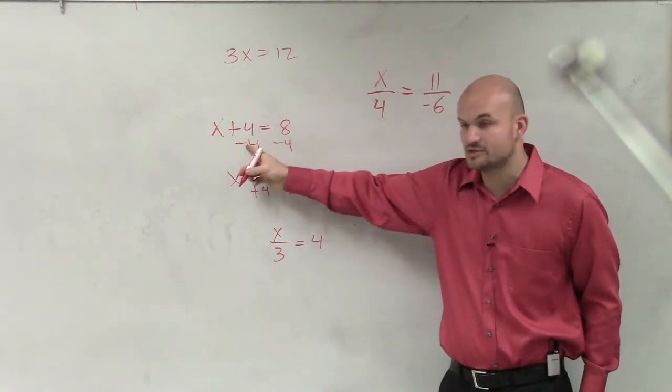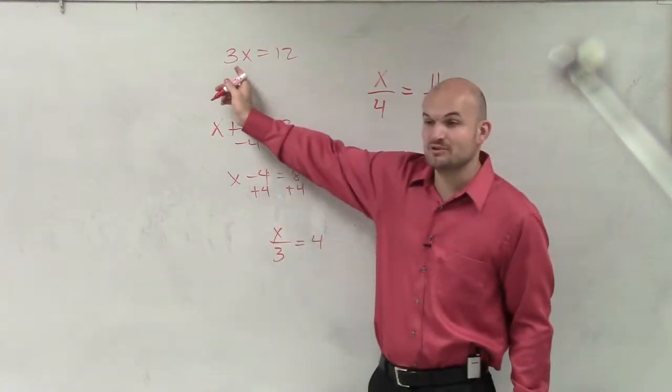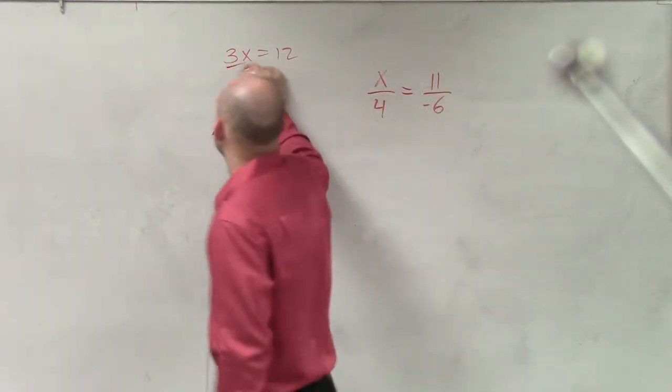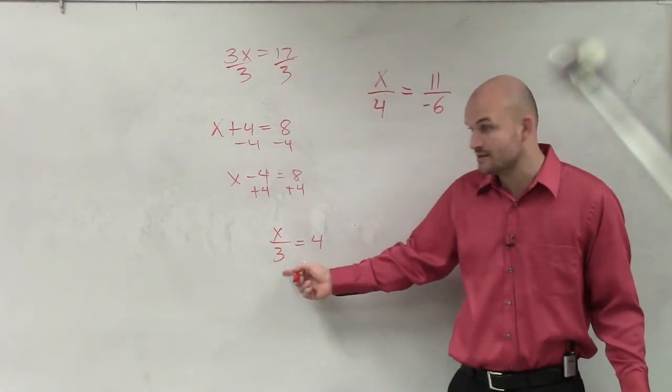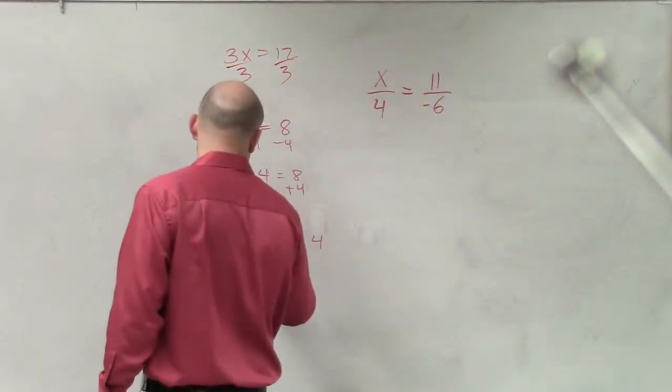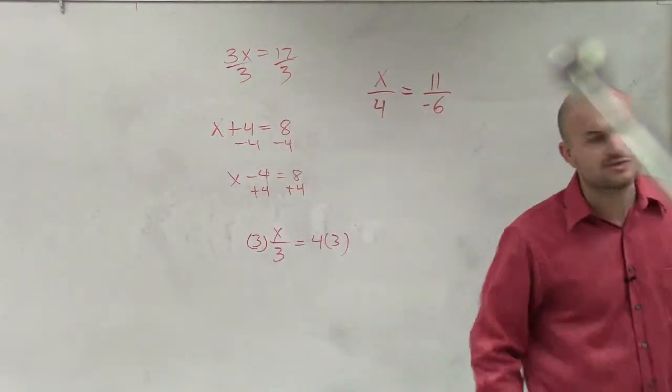Here, my variable is being added, so I subtracted. Here, my variable is being subtracted, so I added. Here, my variable is being multiplied, so I divided. So what is happening to my variable here? I'm multiplying, right? So you'd multiply by 3 on both sides, right? You always do the inverse operation.